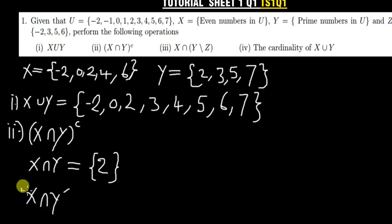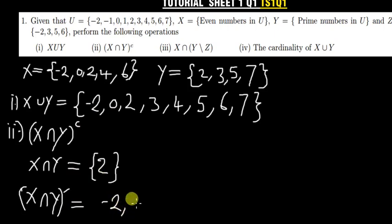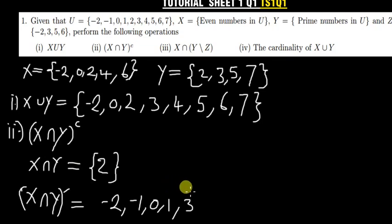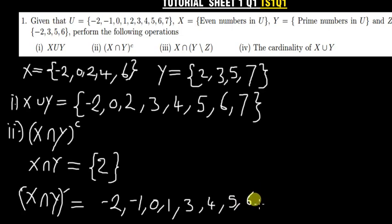So X ∩ Y = {2}. Now to find (X ∩ Y)', we list the whole universal set excluding {2}. So we have: −2, −1, 0, 1, 3, 4, 5, 6, and 7. This is our answer for X ∩ Y'.